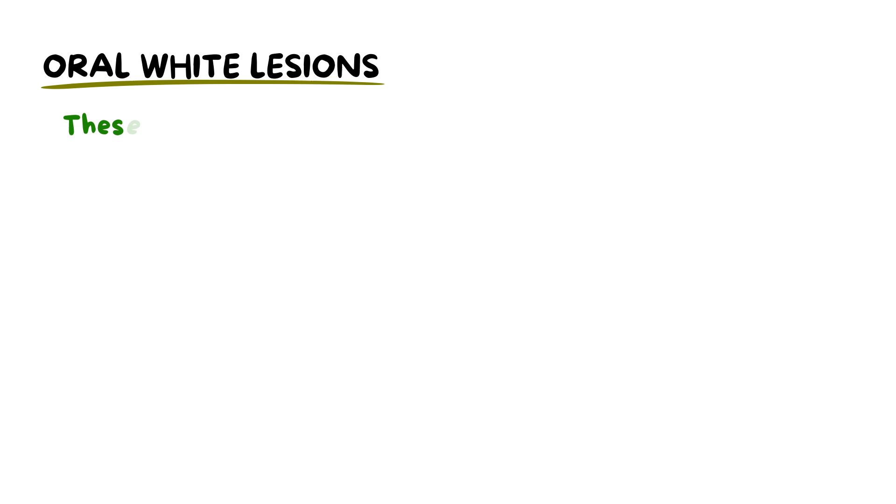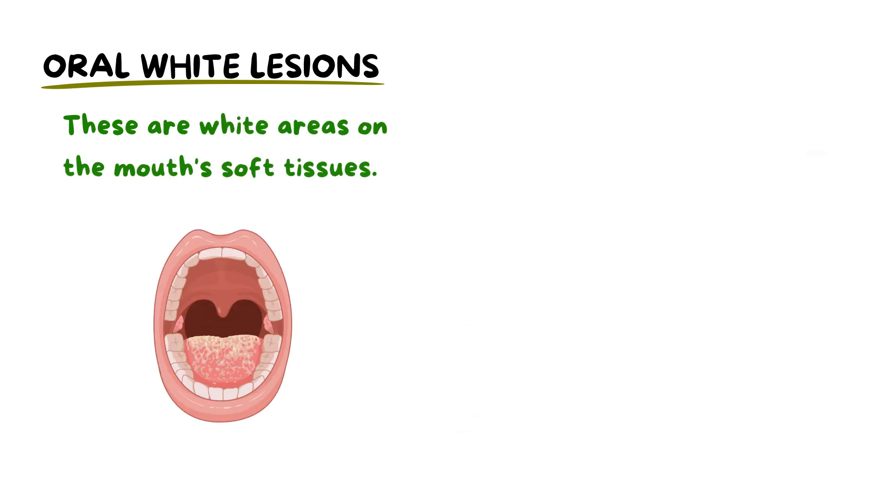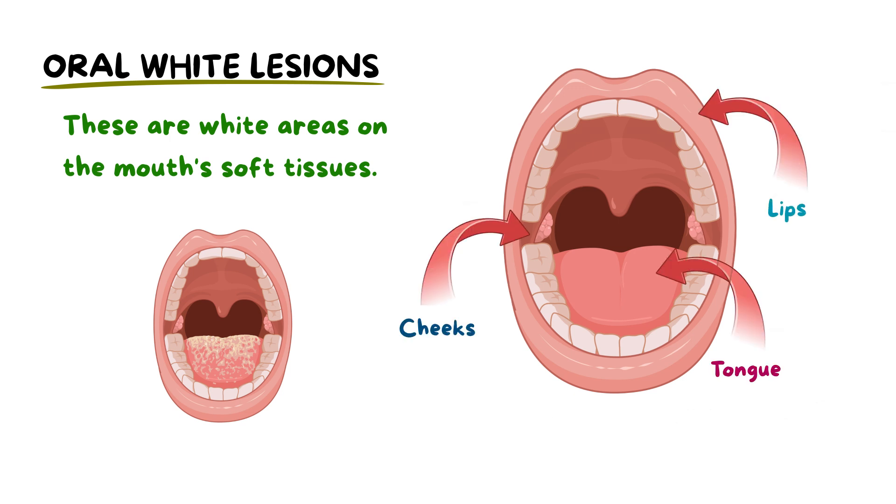Oral white lesions are white-coloured areas of abnormality on the soft tissues of the mouth. These include the lips, tongue, cheeks and gums.